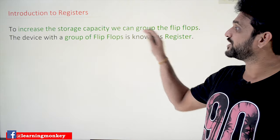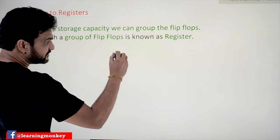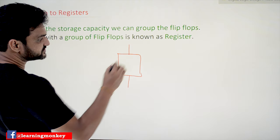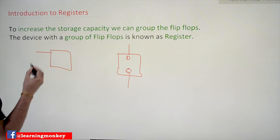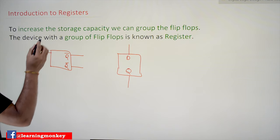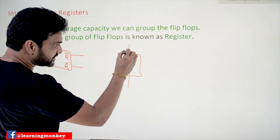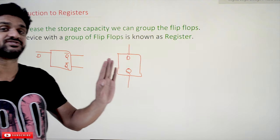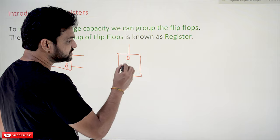Let's try to understand this point. To increase the storage capacity, we can group the flip flops. For example, if we take a D flip flop — this is a simple D flip flop. So this is D's input and this is Q. For simplicity, this is Q and Q bar, and this is D. So this is the input of the D flip flop and this is the output Q. With one flip flop, what we are going to achieve is we can store one value, either 0 or 1.